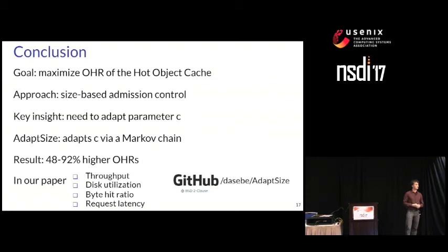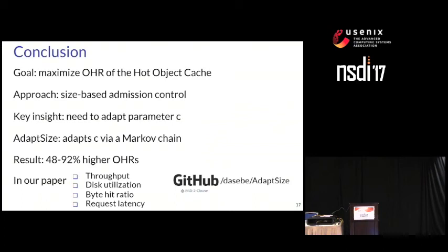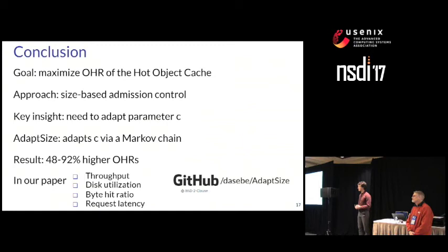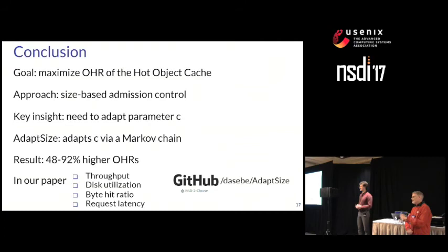Question from a NetApp attendee: You used the hit ratio as your metric, which is a typical approach. But in reality, end-user latency matters. Not caching large objects prevents them from displacing small objects in the cache, but there are different latency values for missing a large object versus a small object. Did you look at the effectiveness of your scheme when you change the metric from hit ratio to latency, and how much does it differ?